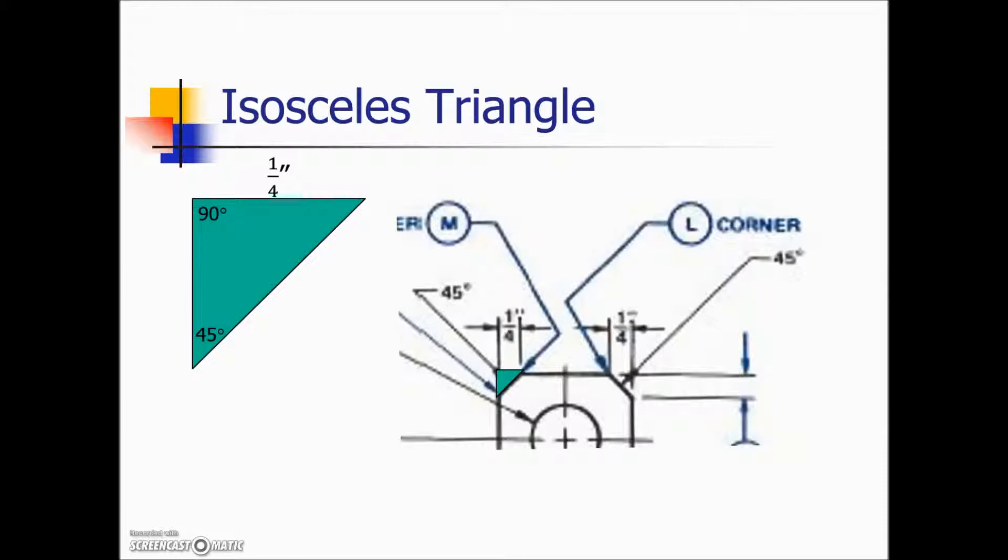Given that this is a 90 degree angle, the remaining angle, because the sum of the angles in a triangle is 180, this third angle has to be 45 degrees. We now have two base angles that are equal, which means we have an isosceles triangle and the left side length of this triangle will be the same as the top. The two equal sides, one quarter of an inch.